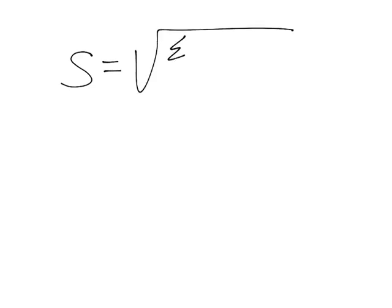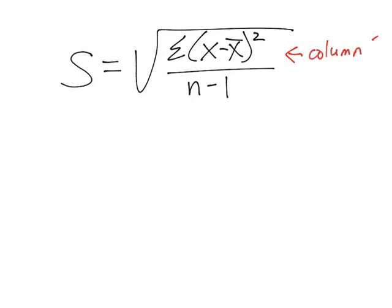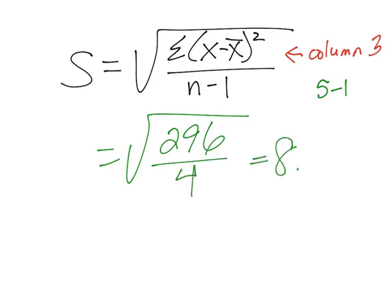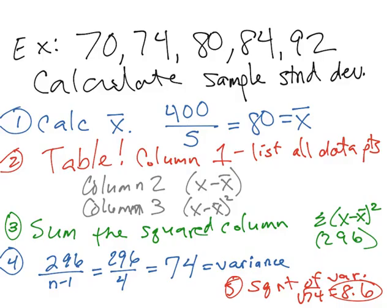Step five is to take the square root of the variance. The square root of 74 is roughly 8.6, which is our standard deviation. To recap: S equals the square root of the sum of (x minus x-bar) squared, all over N minus 1. Column three gave us the numerator of 296, divided by N minus 1 which is 4, and the square root of 296 divided by 4 rounded to the nearest tenth gives 8.6. Breaking it into these five steps — find the mean, create the table, sum column three, divide by N minus 1, and take the square root — makes calculating standard deviation straightforward.